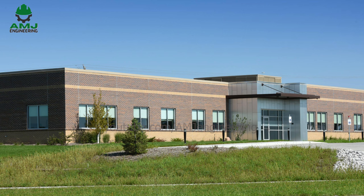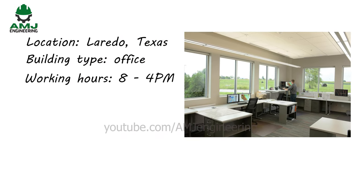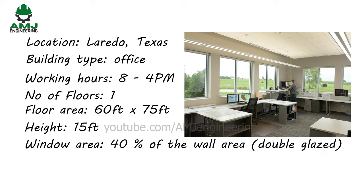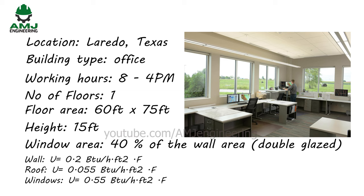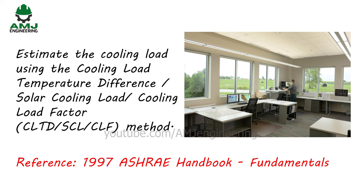Let us take this example. An office building in Laredo, Texas requires air conditioning for a single-story building. The following data is gathered: location Laredo, Texas; building type: office; working hours 8 a.m. to 4 p.m.; number of floors: 1; area: 60 feet by 75 feet; floor-to-floor height: 15 feet; window area considered 40% of the wall area; windows are double-glazed. We will estimate the cooling load using the CLTD-SCL-CLF method.